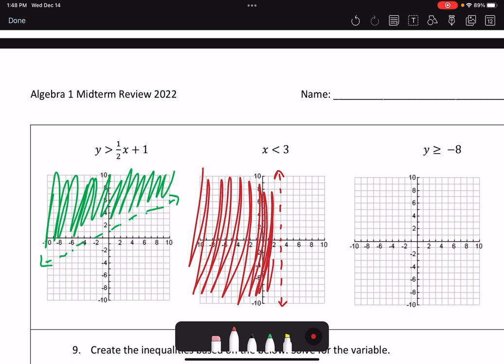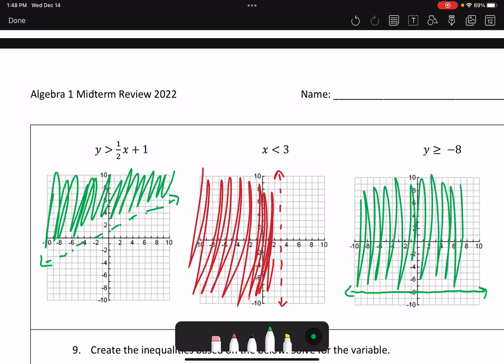My last one says y is greater than or equal to negative 8. And so that means I'm going to have a horizontal line. It's going to be a solid horizontal line because it's equal to it. And I want everything greater, so it's going to be the region above that line.